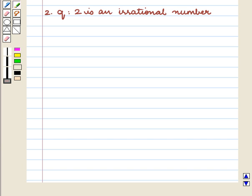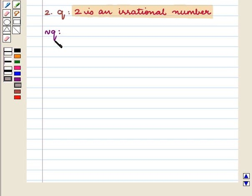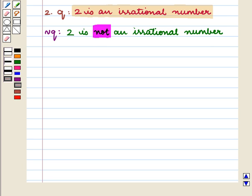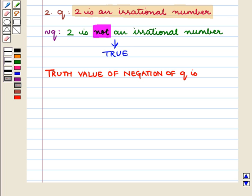The second statement is Q: 2 is an irrational number. Negation of Q will be: 2 is not an irrational number. Now, we know that 2 is not an irrational number, so the statement not Q — that is, 2 is not an irrational number — is a true statement. So the truth value of negation of Q is T.